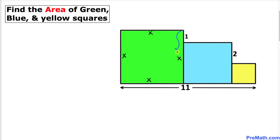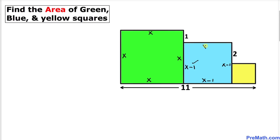Now we know that this whole length is x and this height difference is 1, so this height is going to be x minus 1. If the side of this blue box is x minus 1, then all four sides are x minus 1. We know that this whole height is x minus 1 and this height difference is 2, so this length is going to be x minus 1 minus 2, that is x minus 3.